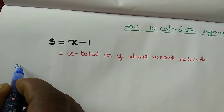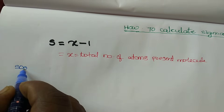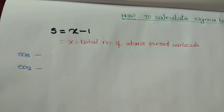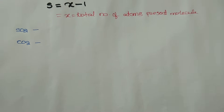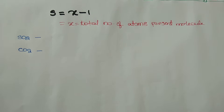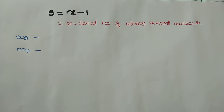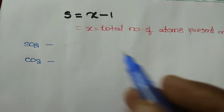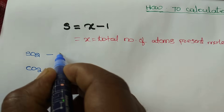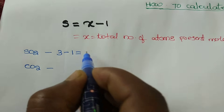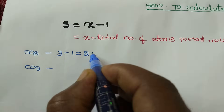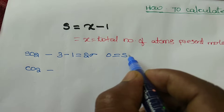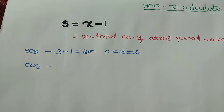I want to know how many sigma bonds are present in SO₂ and CO₂. The total number of atoms in SO₂ is three. So three minus one equals two sigma bonds.